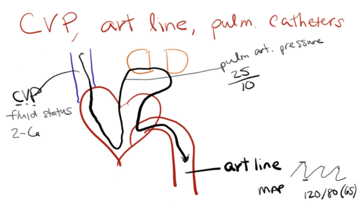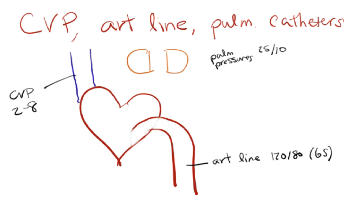Now let's talk through these numbers and what they might mean if you have COPD. I always try to think through these problems in terms of where is the blockage — where is the blood getting stuck. With COPD you have pulmonary congestion, so you have congestion in the lungs.